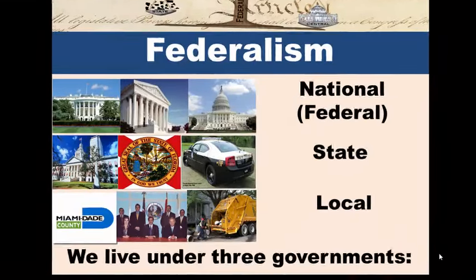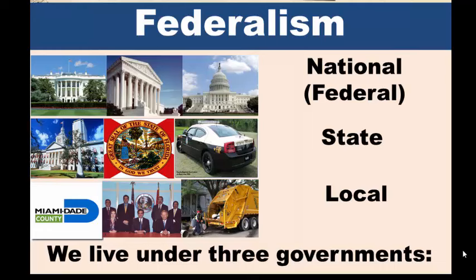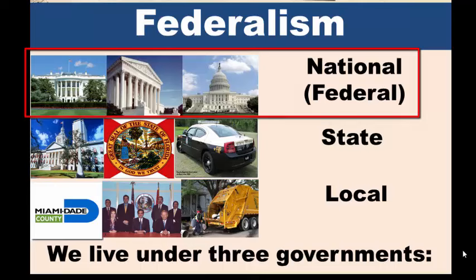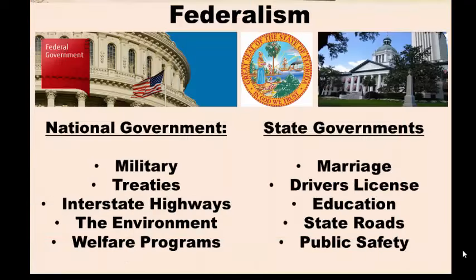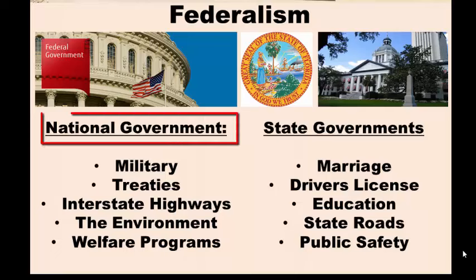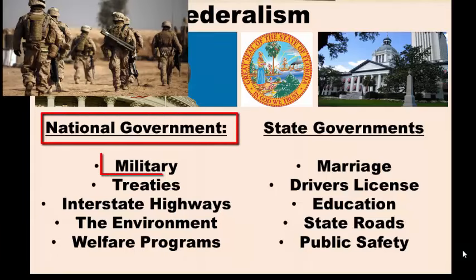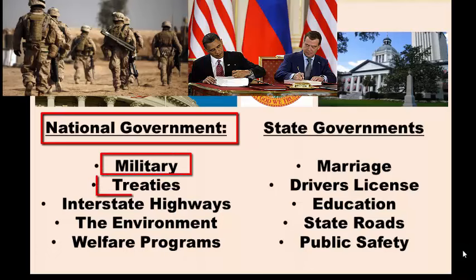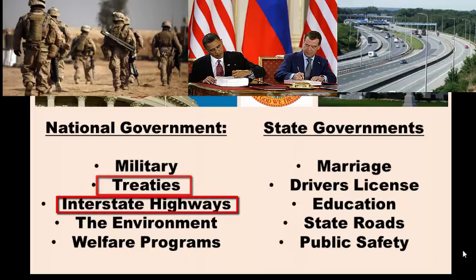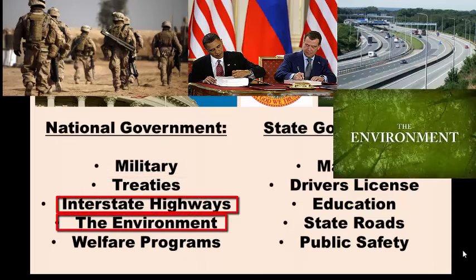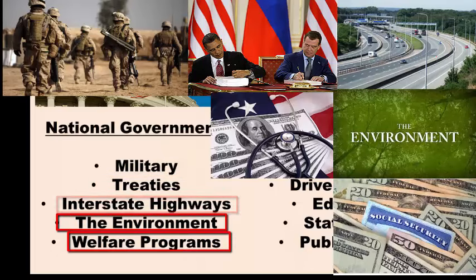Federalism describes how we live under three levels of government: the national, which we call the federal government, as well as state governments and local governments. For your exam, you need to know the different jobs for each of these levels. The national government deals with things like the military and fighting wars, making treaties with other countries, building and maintaining our interstate highway systems, protecting the environment, and large welfare programs like Social Security and Medicare.